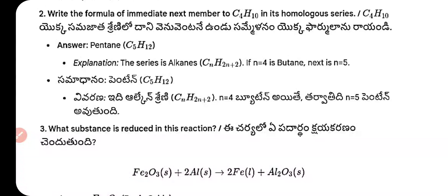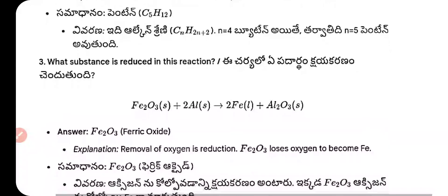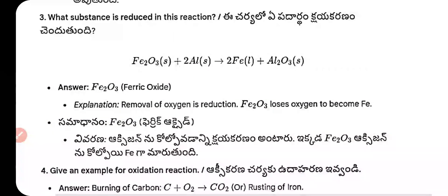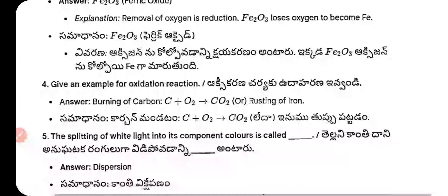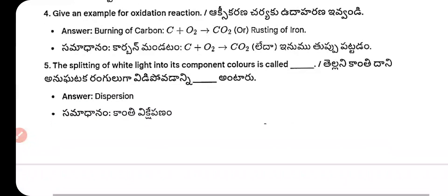Question 3 — In the thermite reaction, Fe₂O₃ is reduced: it loses oxygen to become Fe. Removal of oxygen is reduction. Question 4 — Oxidation reaction example: burning of carbon, C + O₂ → CO₂; also rusting of iron.